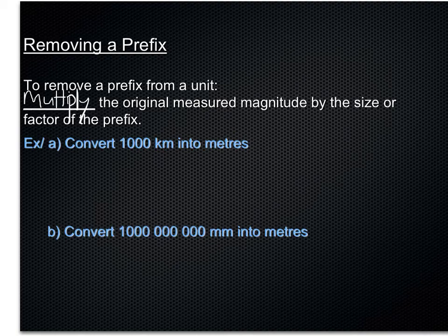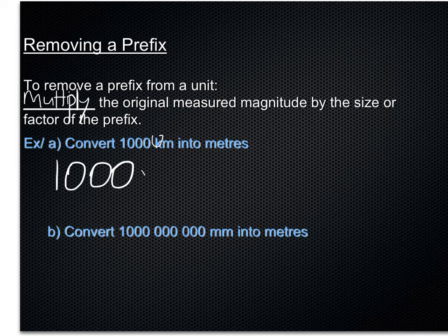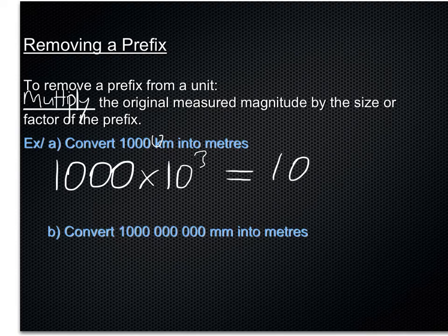So we're going to multiply the 1,000 by the value of the K, which is 10 to the power of 3, or 1,000. That will give us 1,000,000 meters.